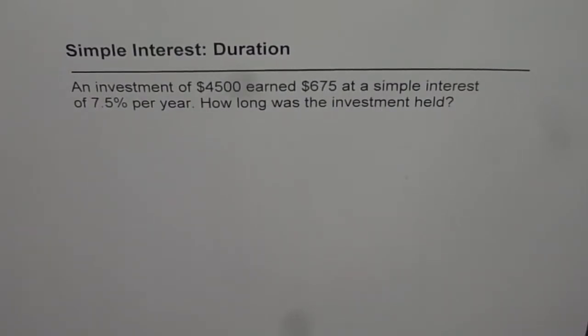Let us try to understand how to find the duration knowing the interest earned. The question here is: an investment of $4,500 earned $675 at a simple interest of 7.5 percent per year. How long was the investment held?